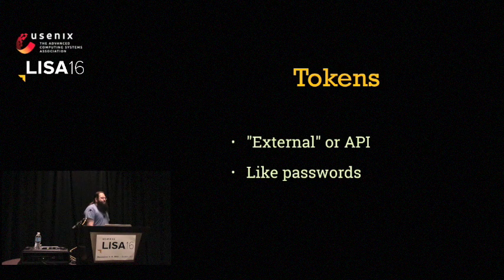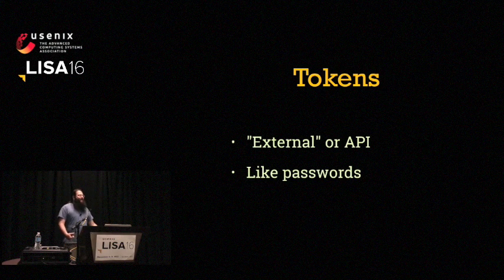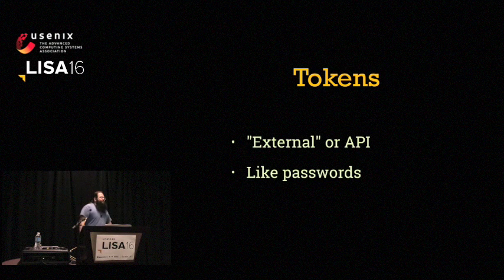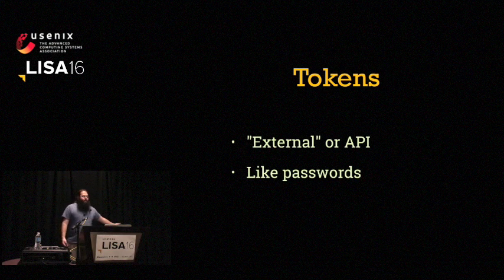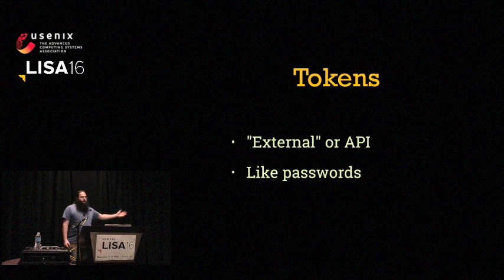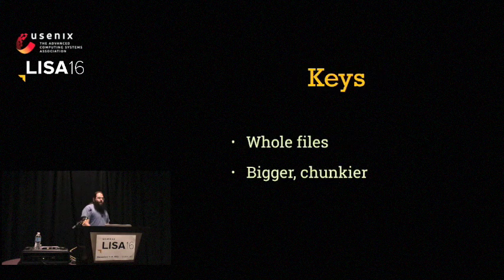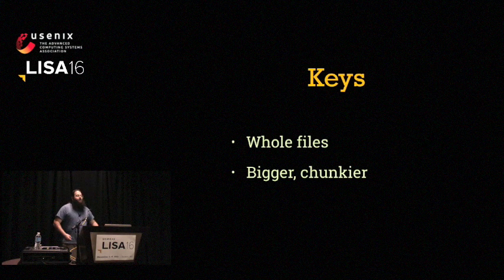In contrast to passwords, tokens are usually things built from the ground up to expect server-to-server interactions, as opposed to originally being for people. They're going to be the same sort of structure — one ASCII word of some kind — but you usually have to use them in raw form; you can't cheat and store a hash of them. Examples include an API credential for PagerDuty or OAuth refresh/access tokens. Keys, as opposed to passwords and tokens, are going to be a lot larger — usually multiple kilobytes — and they have some internal structure: a header, some newlines, whatever. Examples include TLS keys or SSH keys.